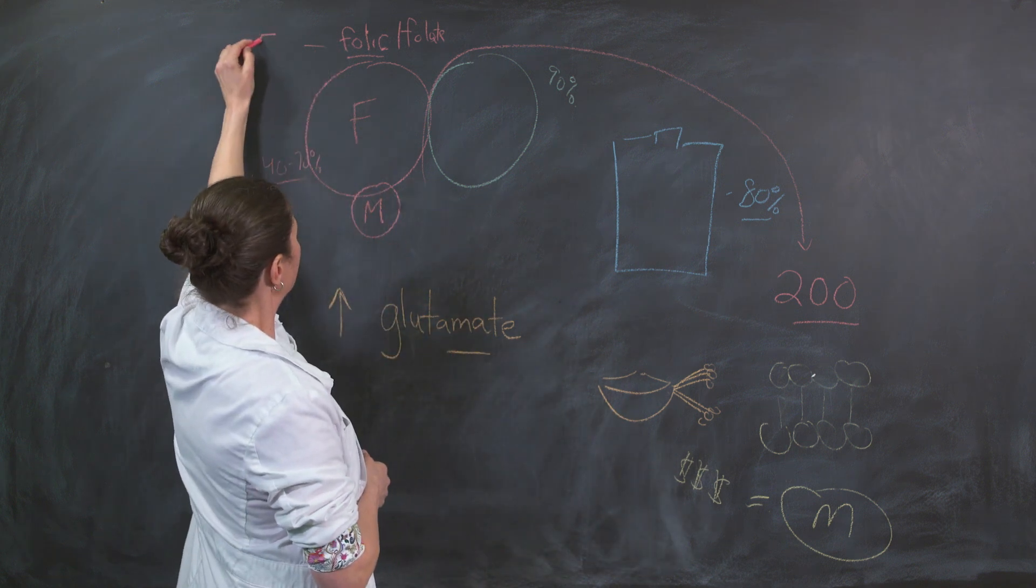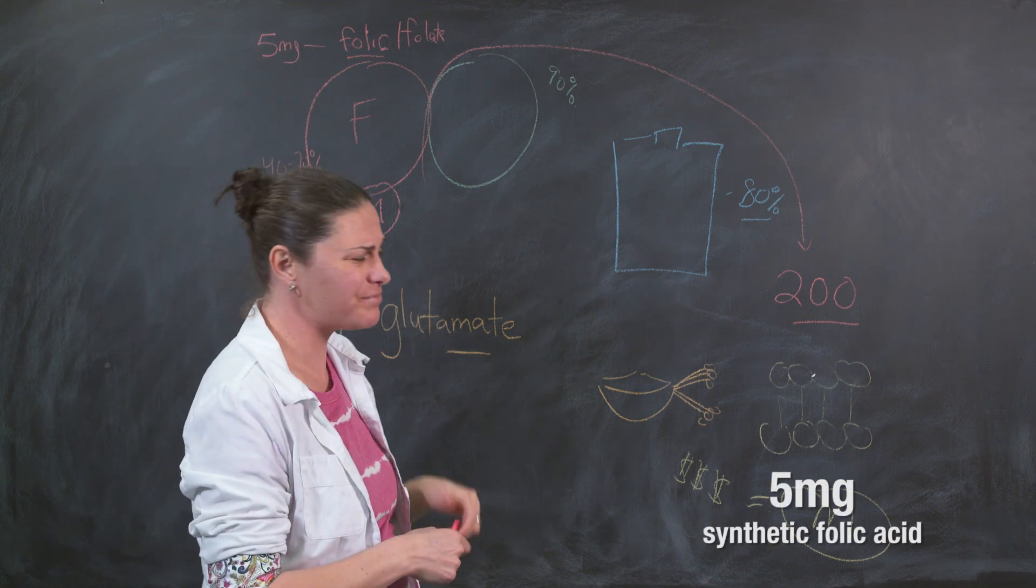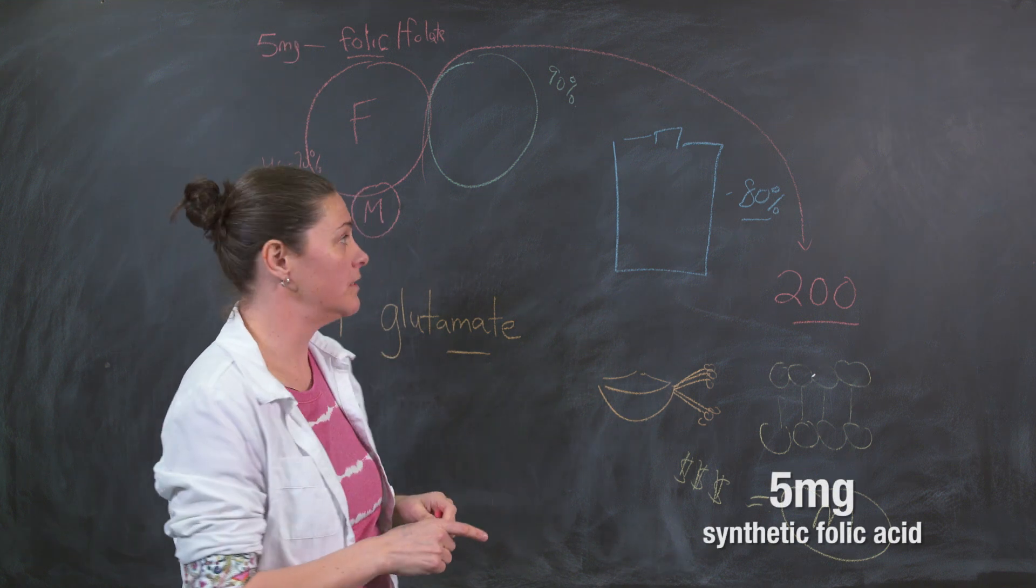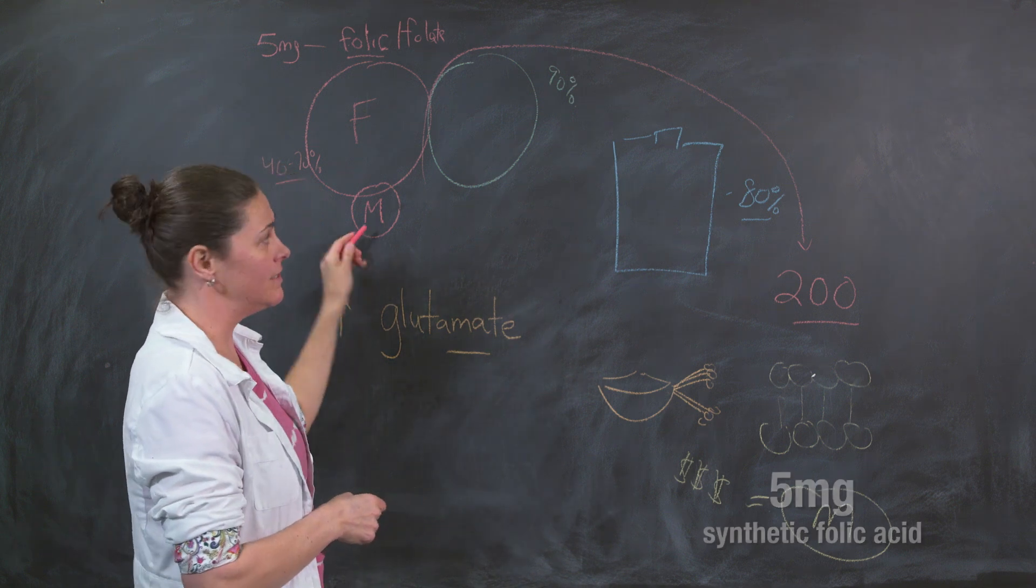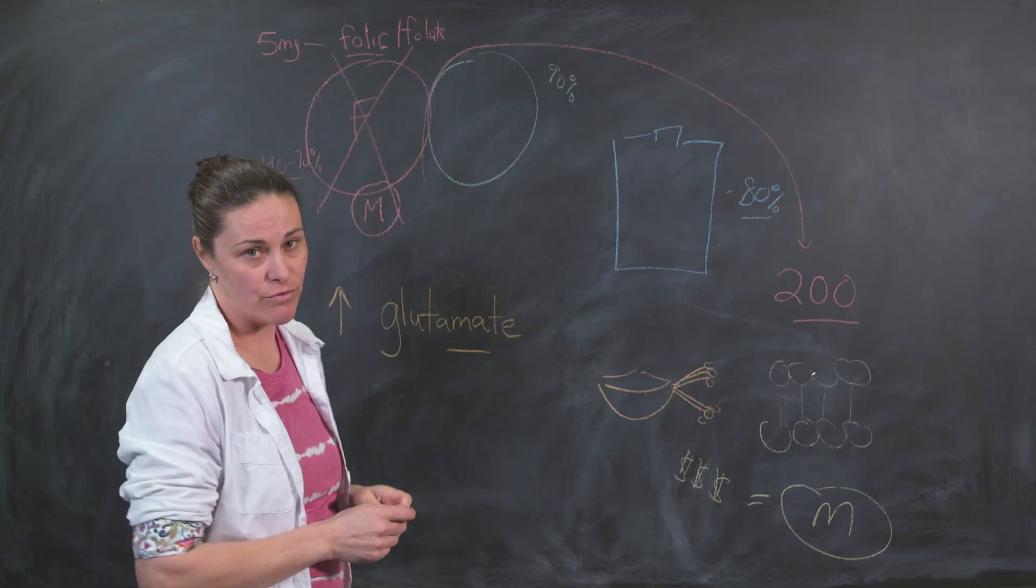Synthetic folic acid in the North American diet is around five milligrams a day, 5,000 micrograms. That's fine if you can convert it, but if you can't, this cycle becomes clogged and it stops moving.